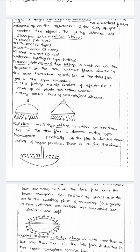The next one is indirect fitting, or E-type fitting lighting scheme. In this type, not less than 90 percent of the total flux is directed in the upper hemisphere. Practically all the flux is directed towards the ceiling and upper positions. There is no glare and no shadows, as the light goes indirectly — it falls above the wall and is then reflected across the entire room.